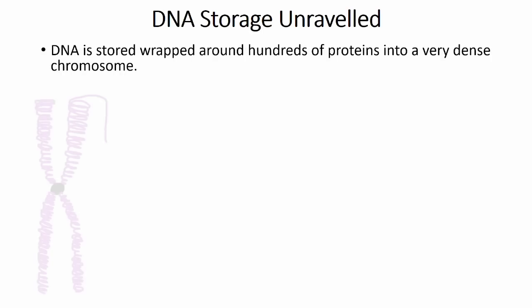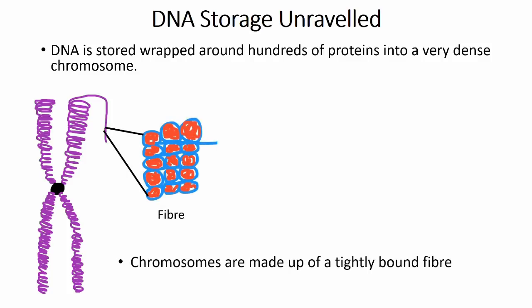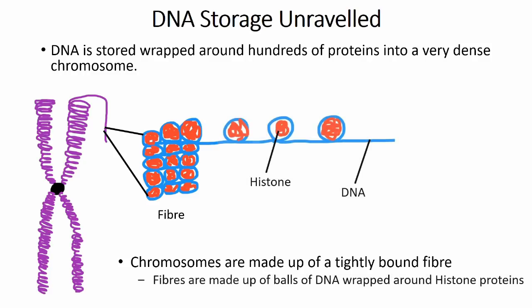If we unravel the chromosome from the structural proteins that form the superstructure, we can find that DNA forms a tight fiber, like a string in a rope. This fiber is made up of a tight packaging of DNA wrapped around a protein called a histone, giving the appearance of a bead on a string. This is how DNA exists when it's not being used.